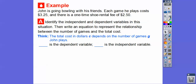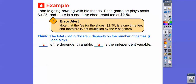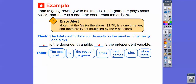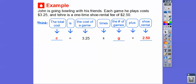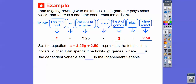The cost c is dependent on how many games he plays, so c is dependent and g is independent. The independent variable is what we plug in to find the total cost. Be careful — the shoe fee is a one-time fee and is not multiplied by the number of games. The total cost is 3.25 times g plus the shoe rental of 2.50. So the equation is c equals 3.25g plus 2.50, where c is dependent and g is independent.